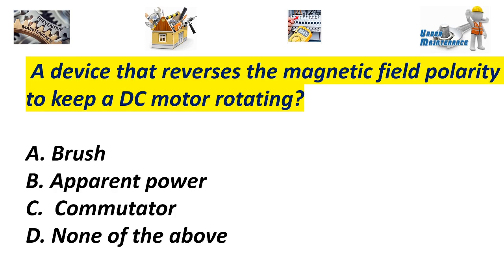A device that reverses the magnetic field polarity to keep a DC motor rotating. A. Brush. B. Apparent power. C. Commutator. D. None of the above. Answer C. Commutator.